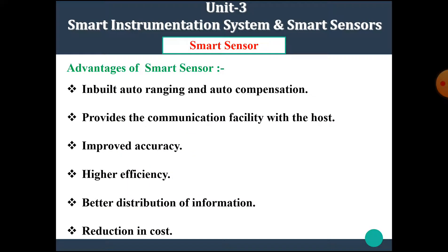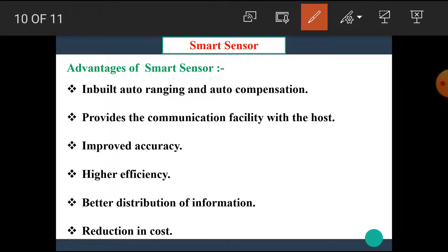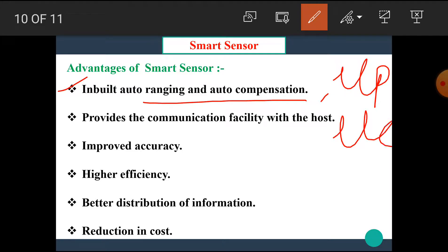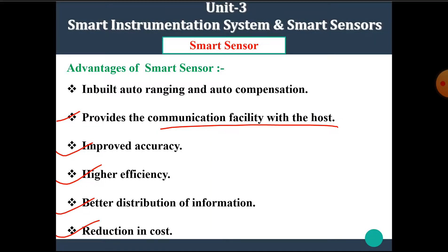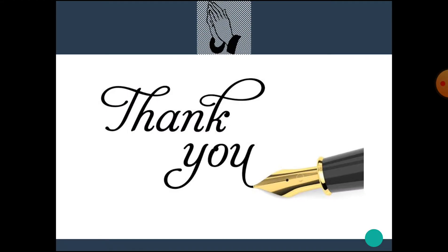There are a number of advantages of the smart sensor. Some of them are inbuilt auto-ranging and auto-compensation, which occur due to the presence of a microprocessor or microcontroller block. It also provides communication facility with the host, improved accuracy, higher efficiency, better distribution of information, and reduction in cost.